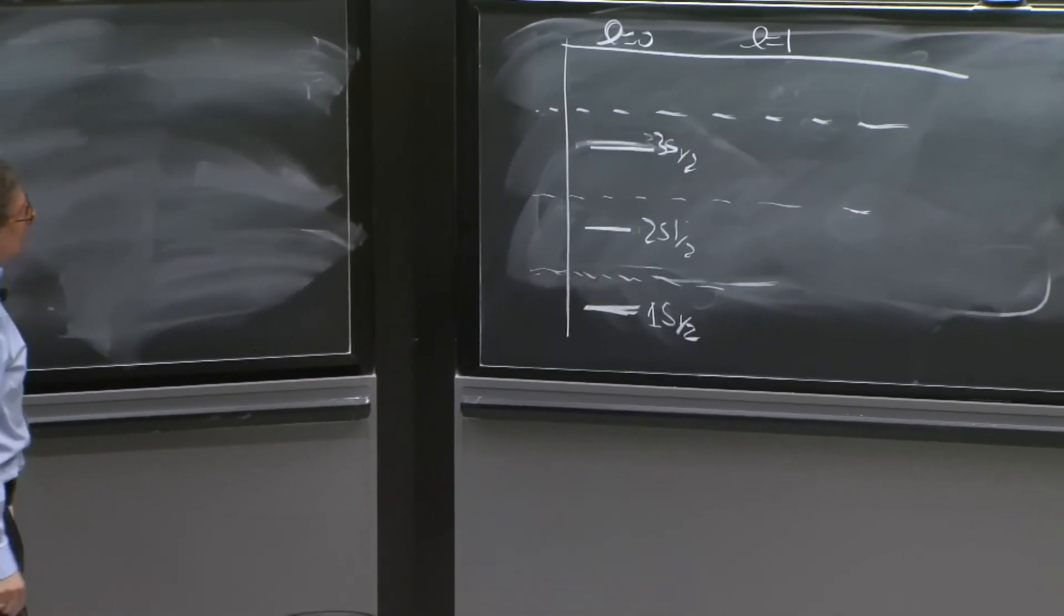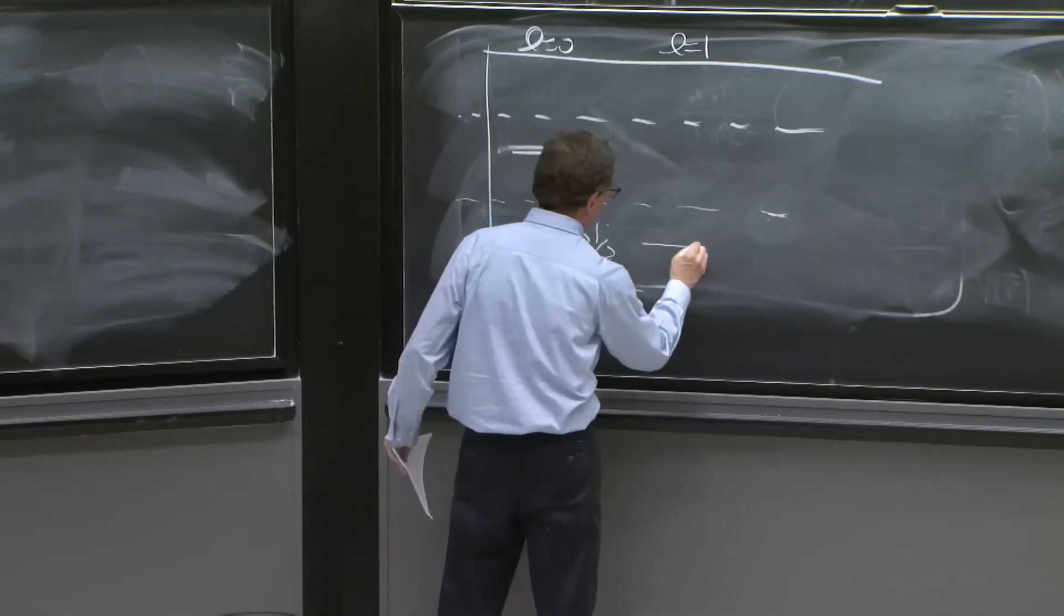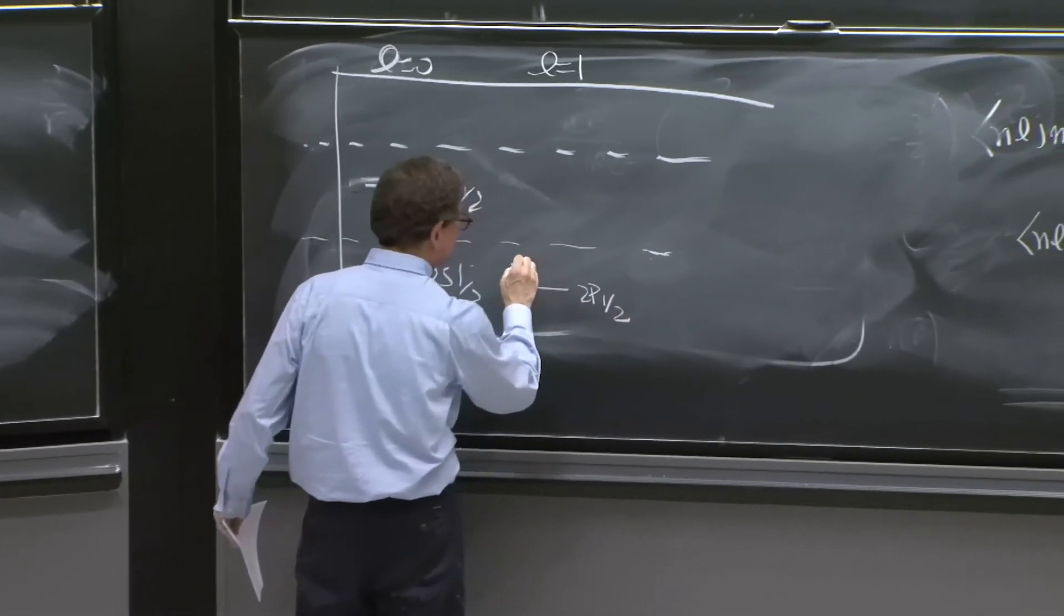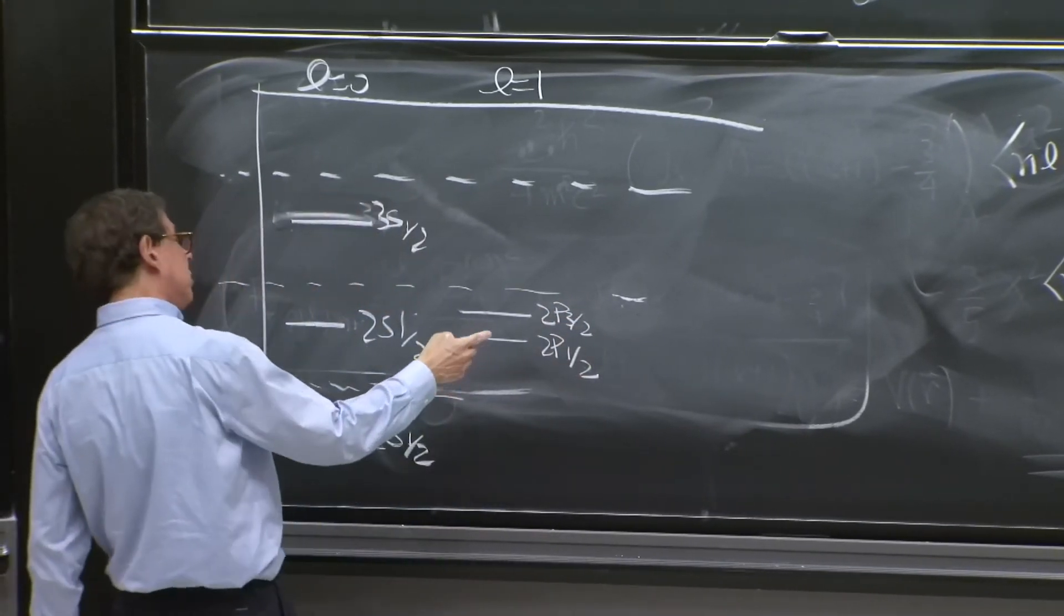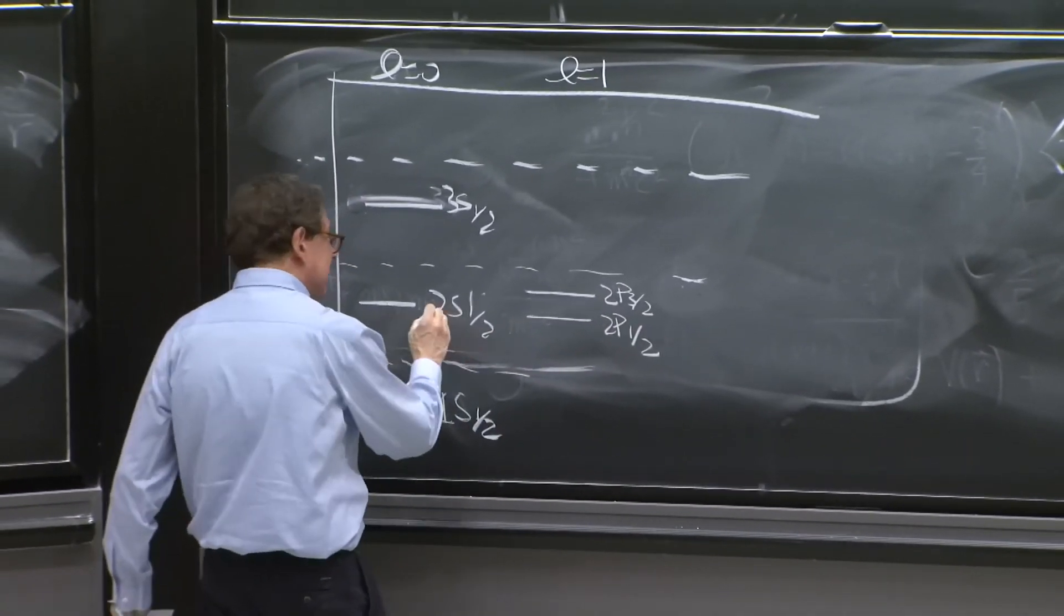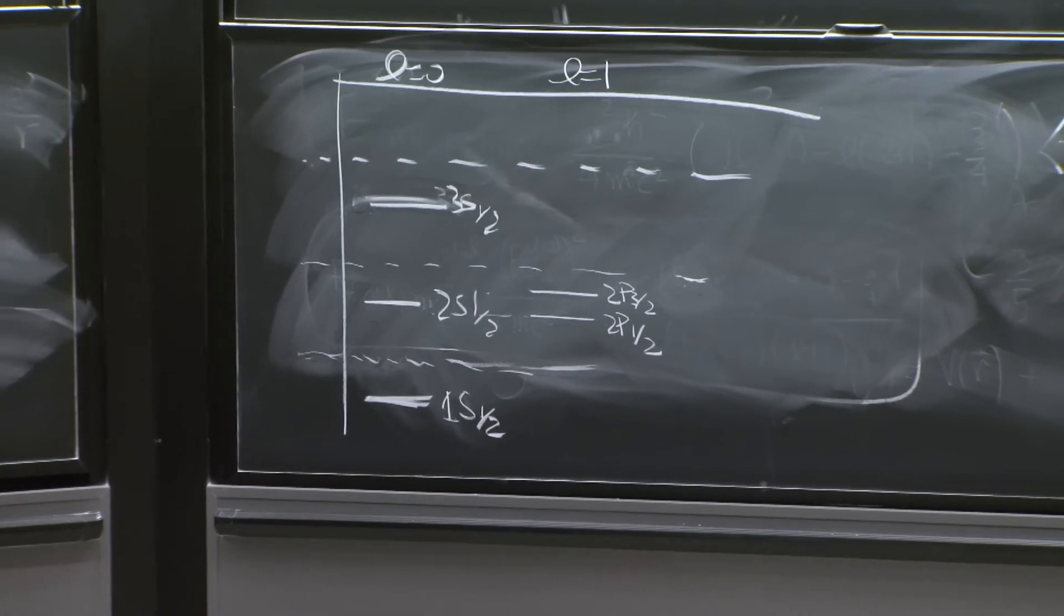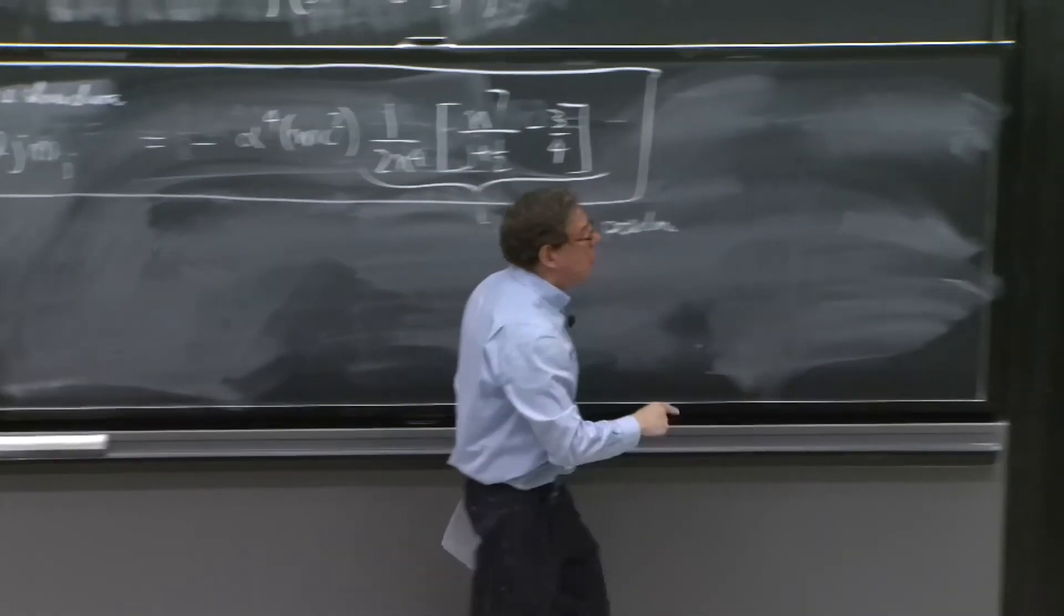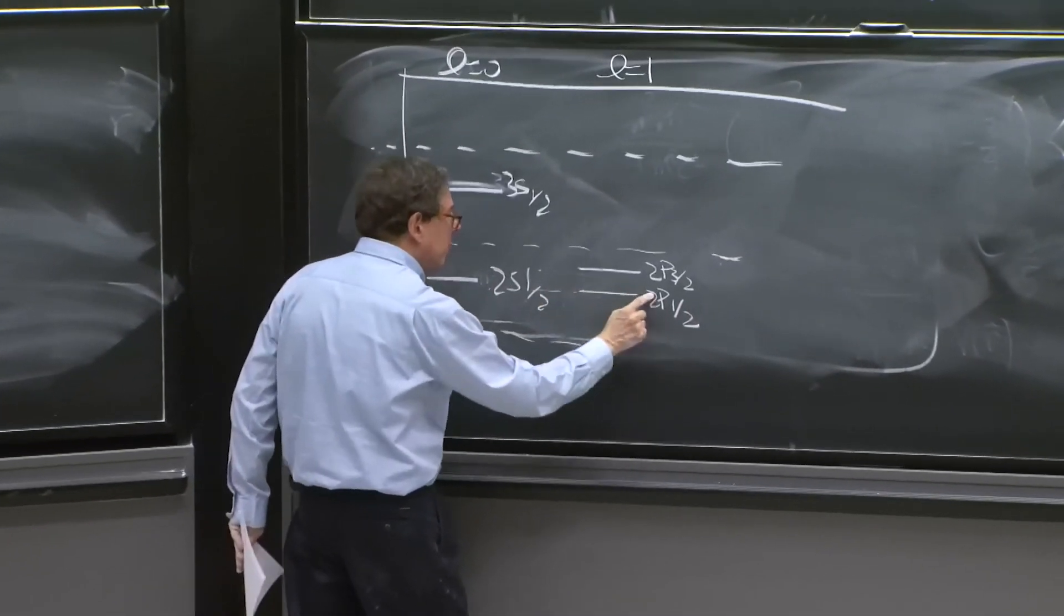Remember, what did we have here? We have 2p 1 half and 2p 3 halves. Because l equals 1 gives you j equals 3 halves and 1 half. Look. These two remain degenerate because they have the same n and the same j. And that's all that matters. So 1 half and 1 half have the same j. So they remain degenerate.